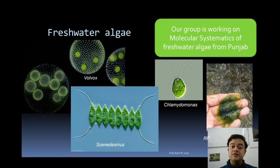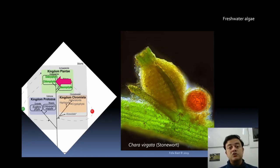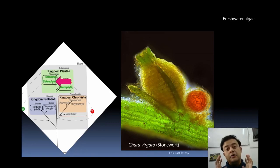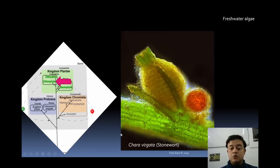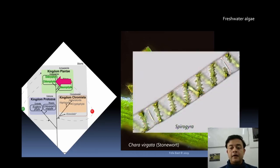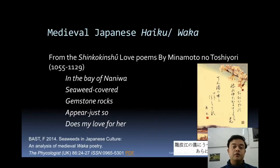Chara is another very interesting freshwater alga — it is the most recent common ancestor with land plants. Chara is not a true chlorophyte; in phylogenetic terms, it sits right at the root of both embryophytes and chlorophytes. Chara virgata and Chara vulgaris are called stoneworts and are classically grouped as green algae. Spirogyra is another example of a freshwater alga.